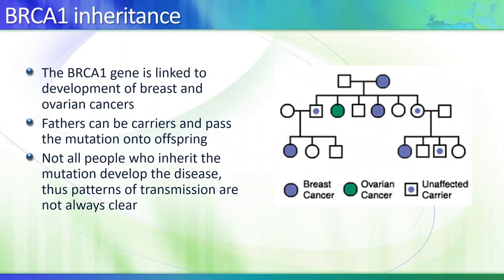Let's talk about one example: breast cancer. In the 1990s, a gene known as BRCA1 was identified to be associated with breast cancer. If a person has a mutation or a genetic variant in BRCA1, the female would be predisposed to develop breast cancer. In this pedigree, this female has a mutation in BRCA1 and she has breast cancer.